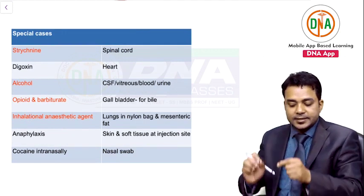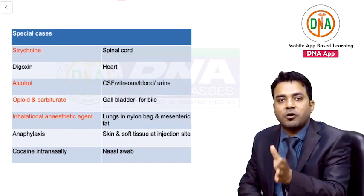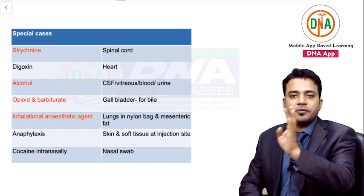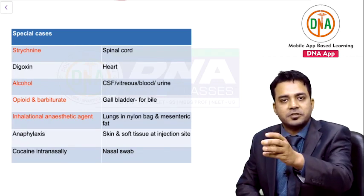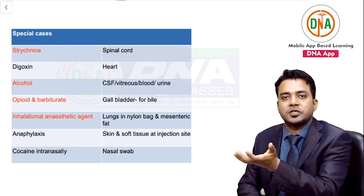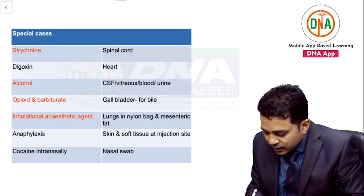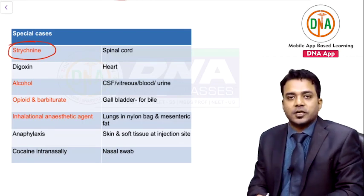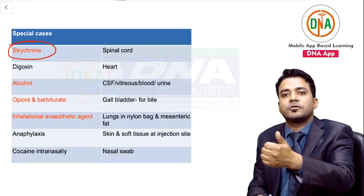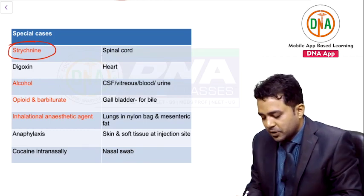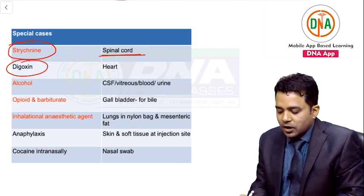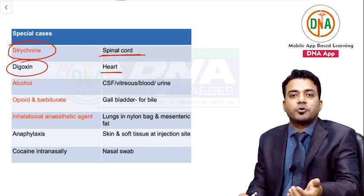Now let us categorize special cases of poisoning where special things need to be preserved. In strychnine poisoning, because its mechanism of action is on anterior horn cells of the spinal cord, the spinal cord will be preserved. Digoxin acts on the heart — so the heart will be preserved in digoxin poisoning.